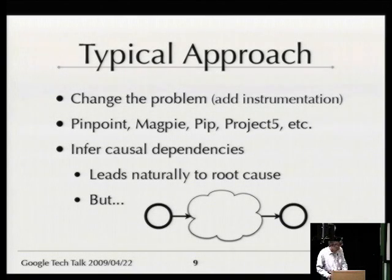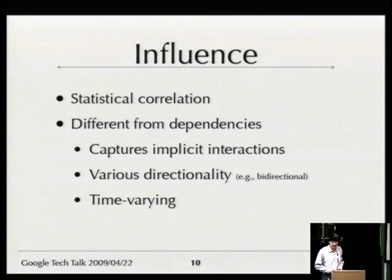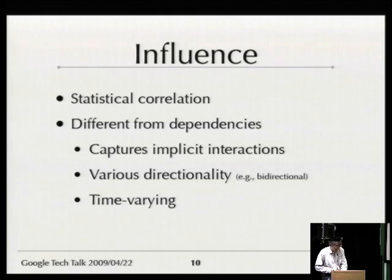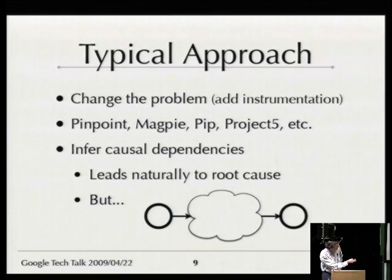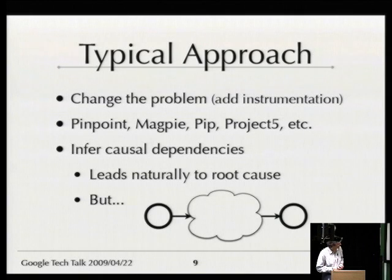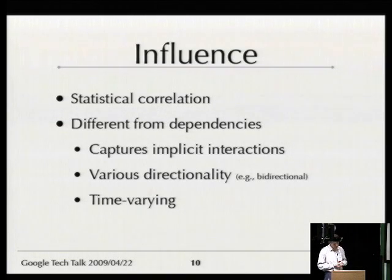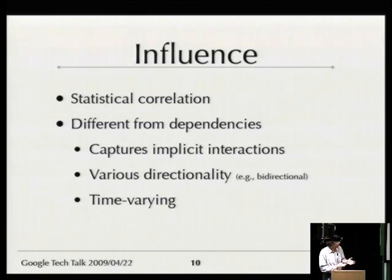If we assume there will always be these clouds — pieces whose structure we don't know — what can we do? We can't figure out the input-output relationship or see what on one side affects what on the other. The organizing idea is to use statistics. Instead of trying to build upon explicitly given dependencies, we're going to use statistical information about what happens on the left and right to infer correlation. We won't be able to get dependencies, but we can get valid statistical correlation.